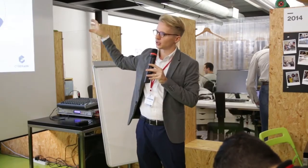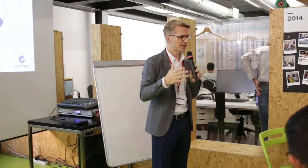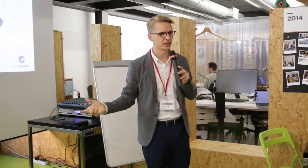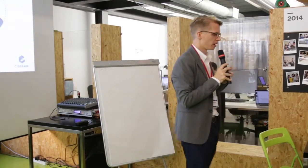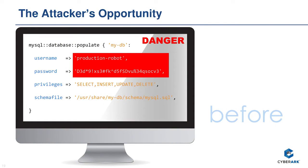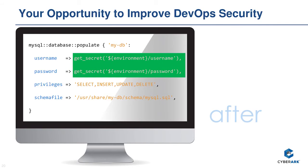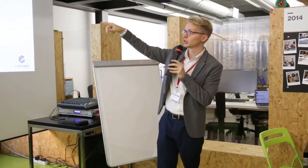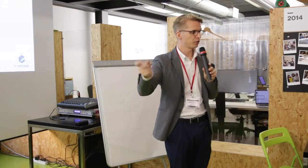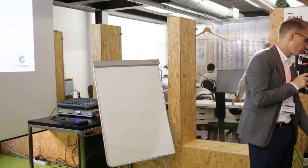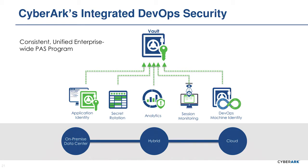A developer today might have too much access — they would actually see the passwords that containers and applications use. Here's how attackers see our code: a Puppet example showing username and password in the code. We can resolve it using an API call — through our REST API we get the secret from our credential vault. As the application does this, we can audit it, authenticate it using the chain of trust. Best of all: no secrets in the source code anymore.